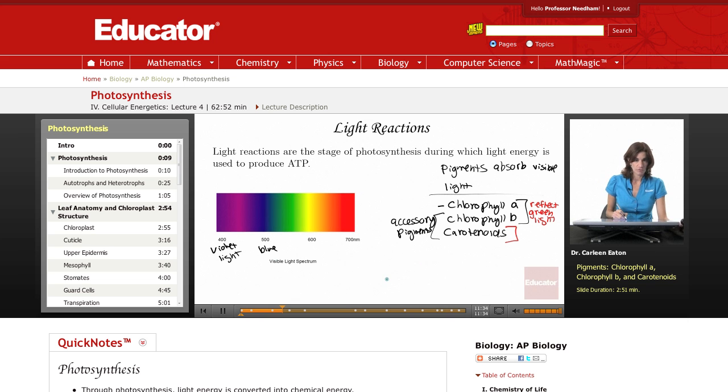Carotenoids actually absorb violet, blue, and green light. So they're absorbing violet, blue, and green light. And that leaves the red and orange part of the spectrum to be transmitted and reflected. So red and orange are transmitted and reflected. Sweet potatoes and carrots are very high in carotenoids. And that's why when we look at them, they appear orange, or reddish orange, or yellowish, because they're reflecting yellow or orange light.